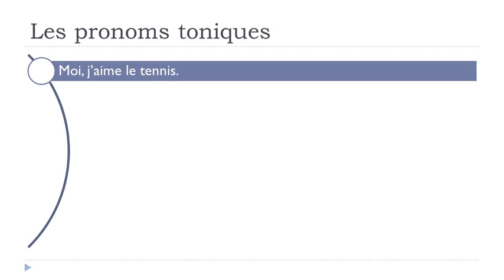I've prepared a few examples. The first one: MOI, j'aime le tennis. Here you can see that you start the sentence with MOI, and then you have to add the pronom personnel — 'je' becomes 'j'' because the verb starts with a vowel. So MOI, j'aime le tennis. If you start with MOI, you want to insist on the fact that you really like or love tennis.